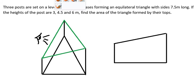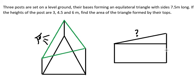If we want to find this value here, we need to consider that the heights are different. For example, this one we have number three, and this one we have four-point-five. So we can find the difference: four-point-five minus three equals one-point-five.